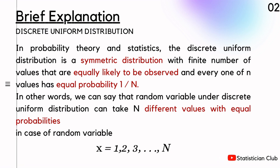Each of the n values has equal probability 1 over N to occur. In other words, we can say that any random variable under Discrete Uniform Distribution takes N different values with equal probabilities.